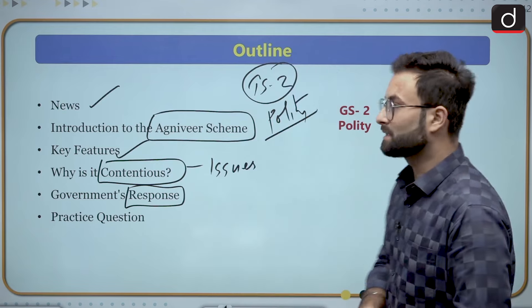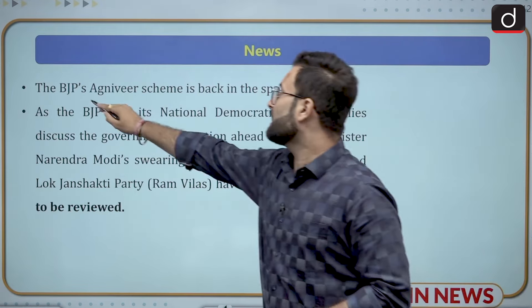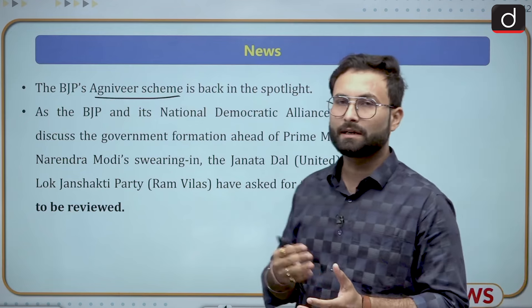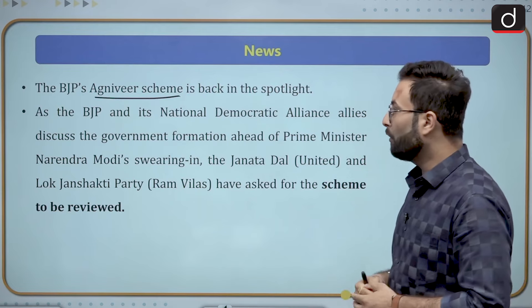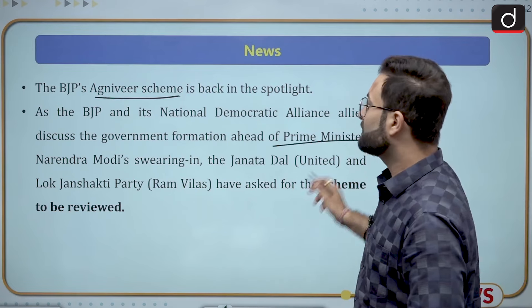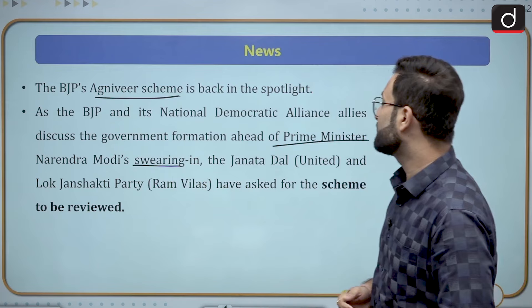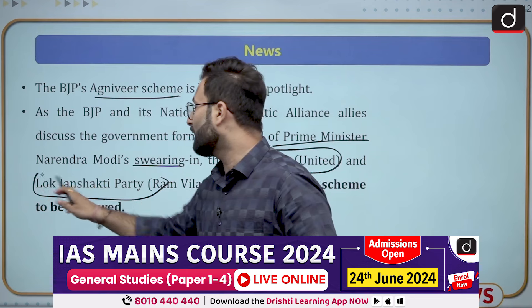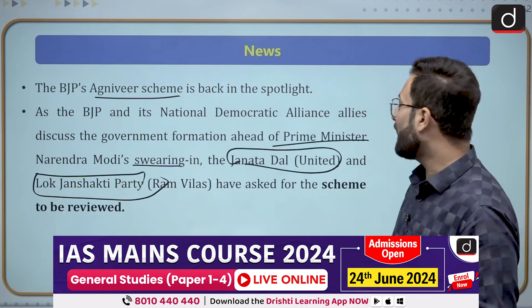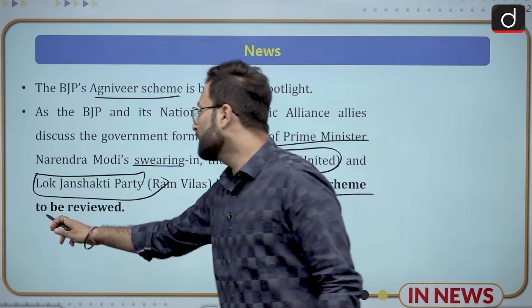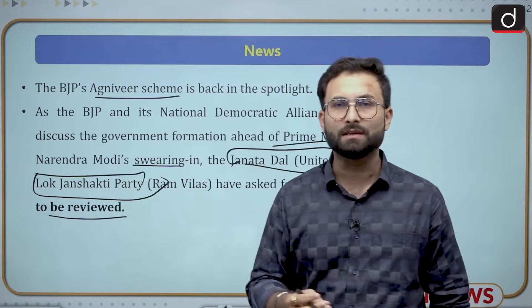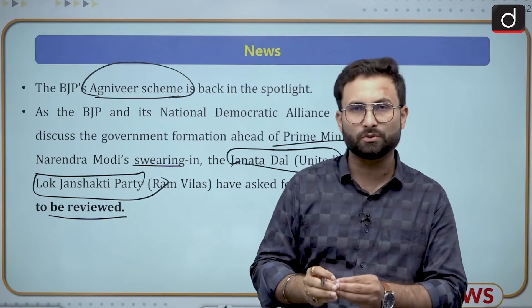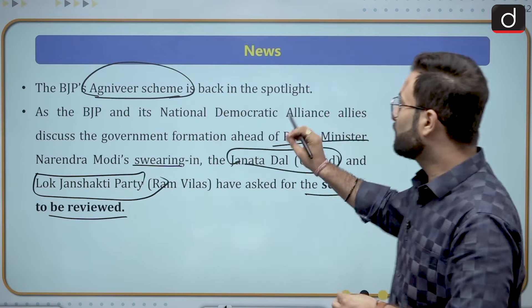The BJP's Agniveer scheme is back in the spotlight as BJP and the NDA, the National Democratic Alliance, are trying to form the government. Ahead of the Prime Minister's swearing-in, the Janta Dal United and Lok Janshakti Party Ram Vilas, both allies of NDA, have asked for the scheme to be reviewed. These allies are saying the Agniveer scheme should be reviewed because there are certain concerns attached to it.